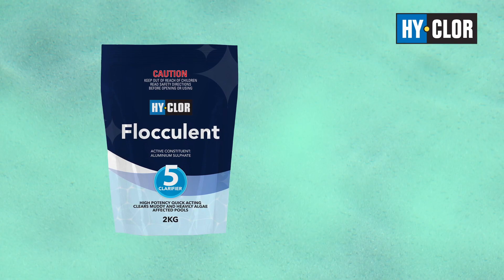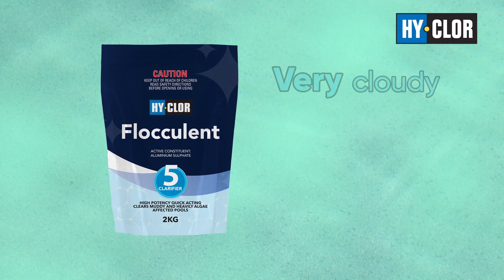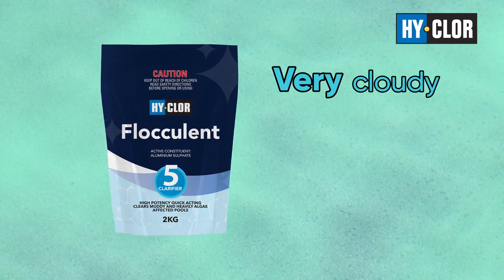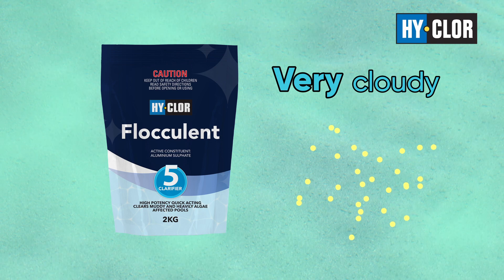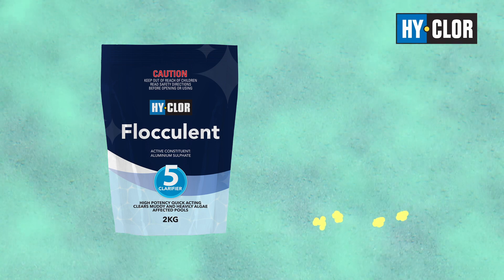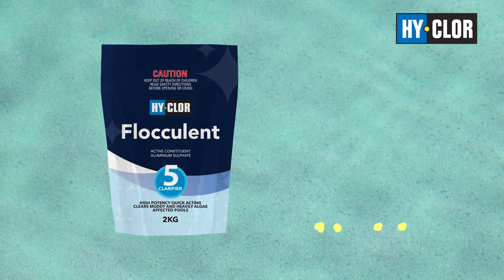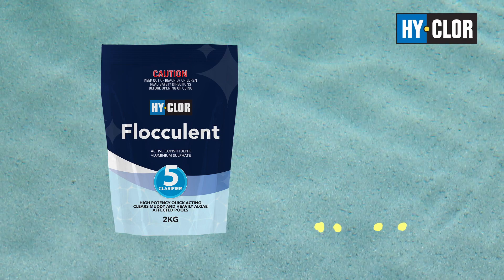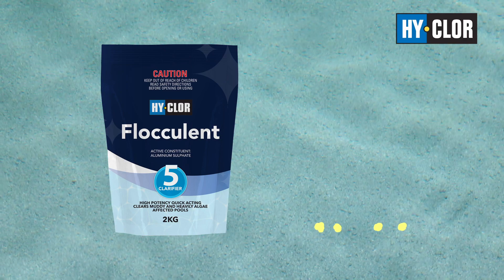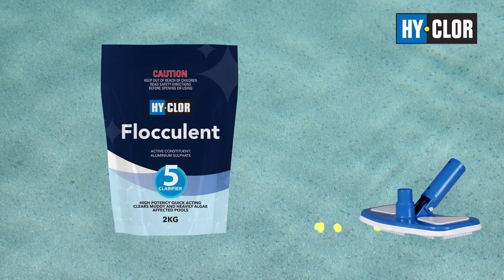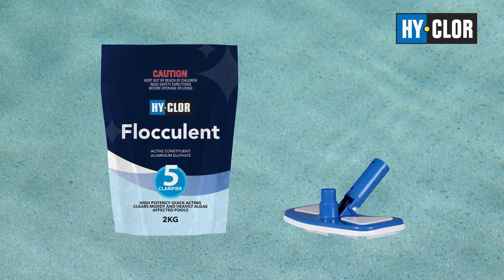Pool flocculent works in much the same way, however it is generally used when the pool is very cloudy. Pool flocculent thickens the particles in suspension and binds them together so they sink to the floor. Due to the particles being bigger and heavier, they cannot be removed by the filter system and need to be vacuumed to waste.